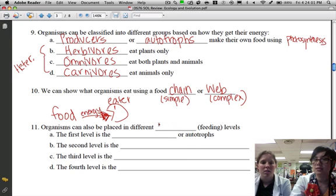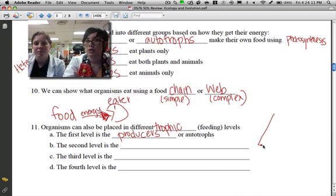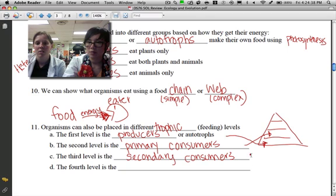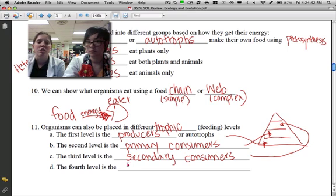Number eleven: organisms can also be placed in different trophic or feeding levels. The first level is the producers or autotrophs. It would be the bottom of the pyramid, the biggest portion, because we know that there are more producers on the planet than there are anything else. Our second level is the primary consumers, the first guys that have to eat stuff. The word primary means first or one. Our third level is the secondary consumers, because it's the second level of consumption. And our fourth level is the tertiary consumers, which means third or the level furthest removed from our producers.